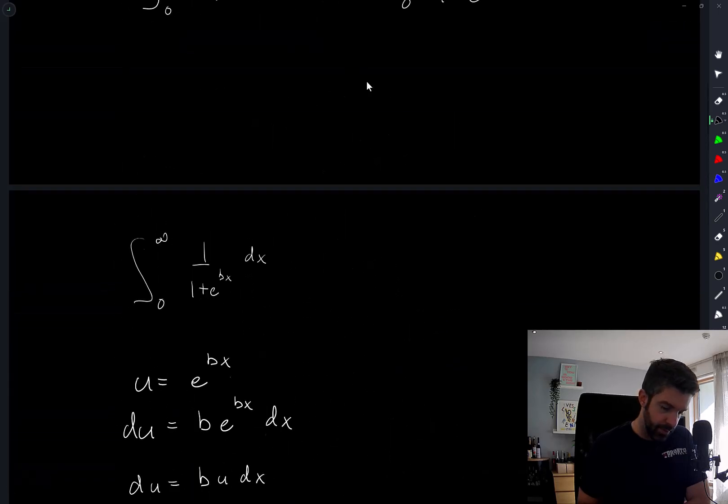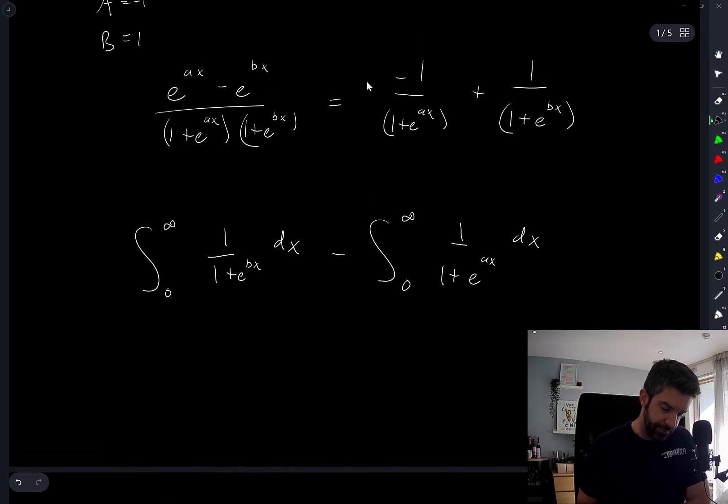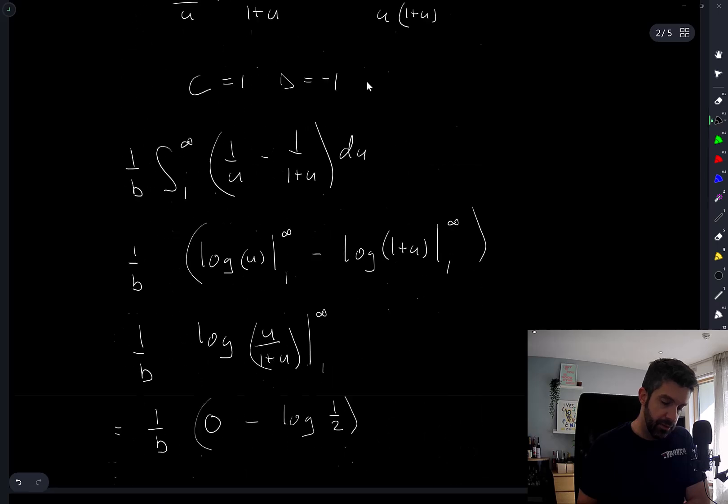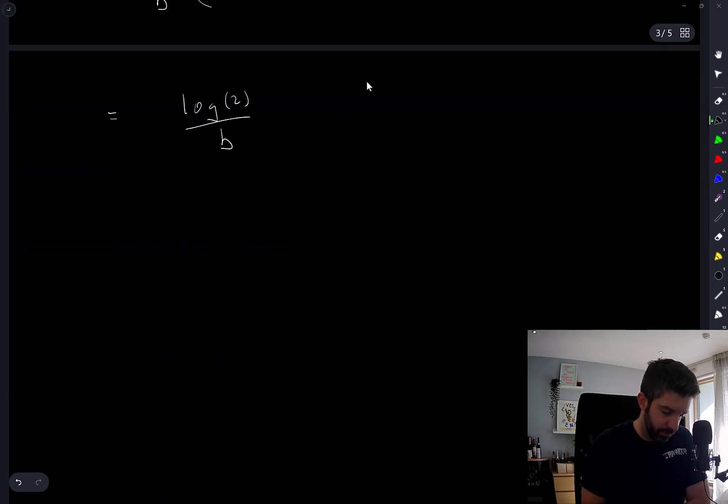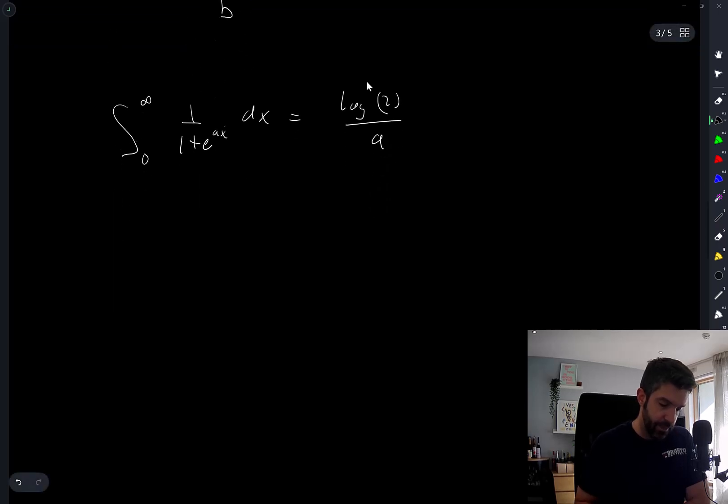And the other integral is exactly the same, except a negative sign in front, and b is replaced with a. So this means the integral from zero to infinity of one over one plus e to the ax dx is equal to log base two over a.